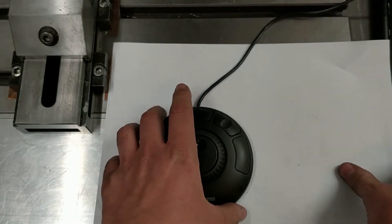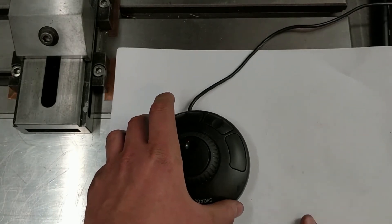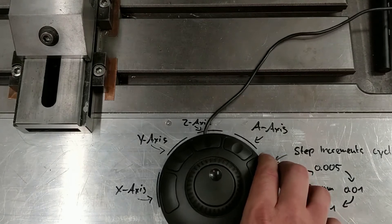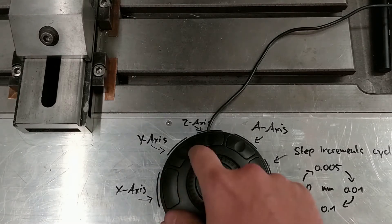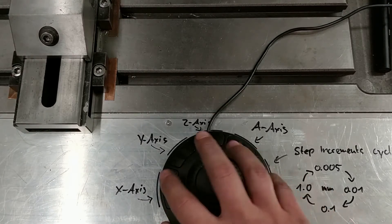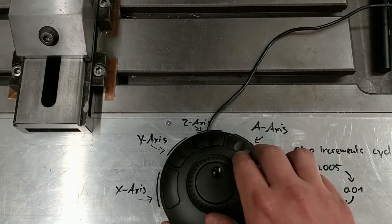So what I configured in LinuxCNC is here, drawn on the table. So each of these buttons, of the four buttons here, is for one axis.